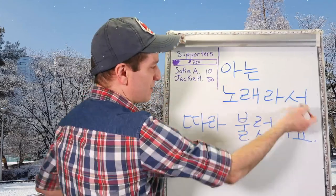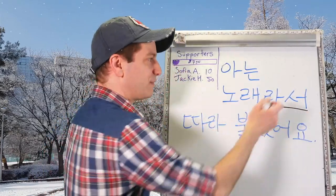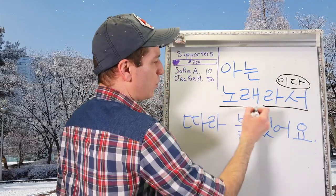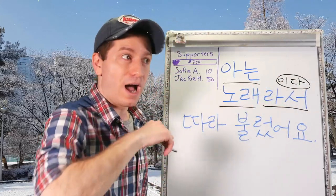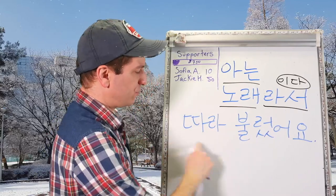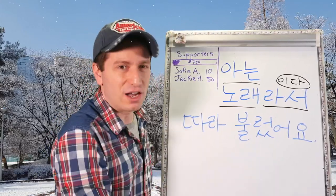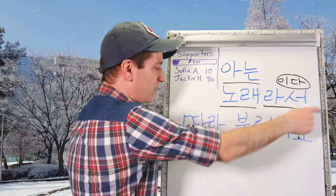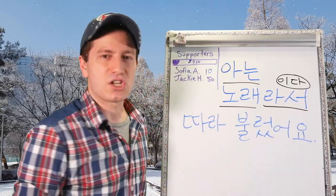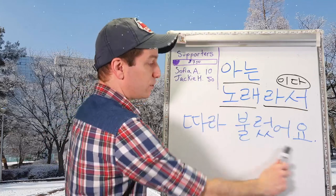아는 노래라서 — because it is a song (노래) that I know (아는). Remember, 라서 is from 이다, to be. 따라 부르다 is to follow and sing — literally, to sing along. 아는 노래라서 따라 불렀어요: I sang along because it's a song that I know.